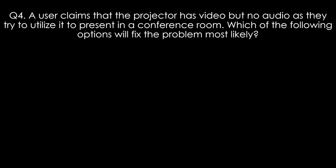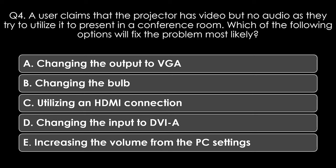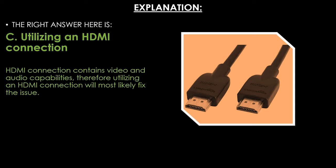Question four. A user claims that the projector has video but no audio as they try to use it to present in a conference room. Which of the following options will most likely fix the problem? Options: A: changing the output to VGA, B: changing the bulb, C: utilizing an HDMI connection, D: changing the input to DVI-A, E: increasing the volume from PC settings. The right answer is C, utilizing an HDMI connection, because HDMI contains both video and audio capabilities and will most likely fix the issue.